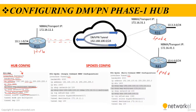NHRP provides a mapping service of the protocol tunnel IP address to the NBMA transport address for multicast packets as well. In order to support multicast or routing protocols that use multicast, this must be enabled on DMVPN hub routers with the tunnel command 'ip nhrp map multicast dynamic'.